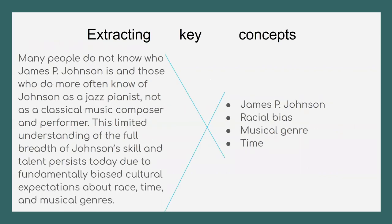We need to find a way to get some research terms out of this large thesis statement — essentially distilling it into a few core concepts. In this example, we have James P. Johnson, racial bias, musical genre, and time as our four core concepts.